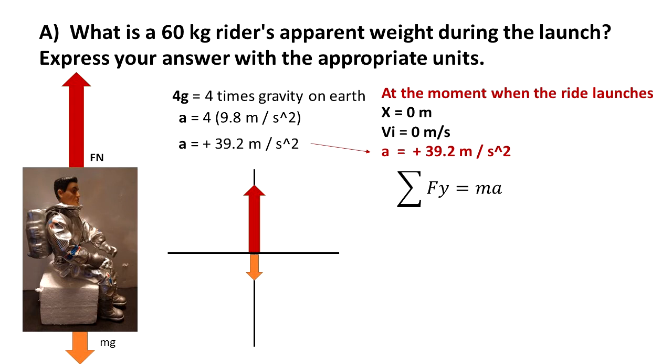At that moment, the rider must be feeling 4 times heavier. The summation of the forces in the y direction is equal to mass times acceleration, because there is an unbalanced force upwards, so we say that FN minus mg are equal to ma. We are going to plug in the given and the known values.